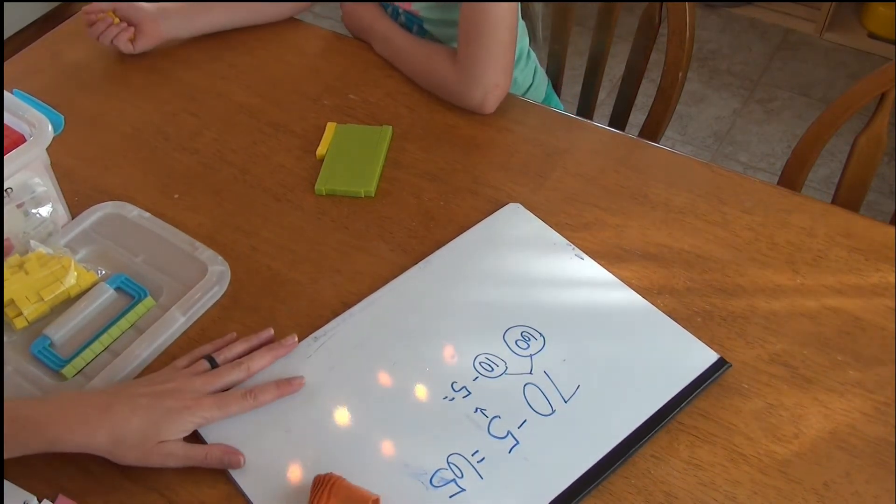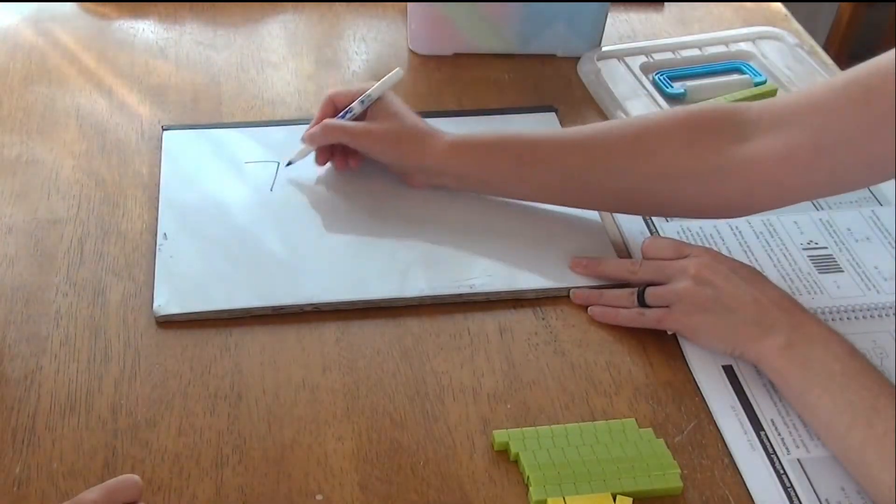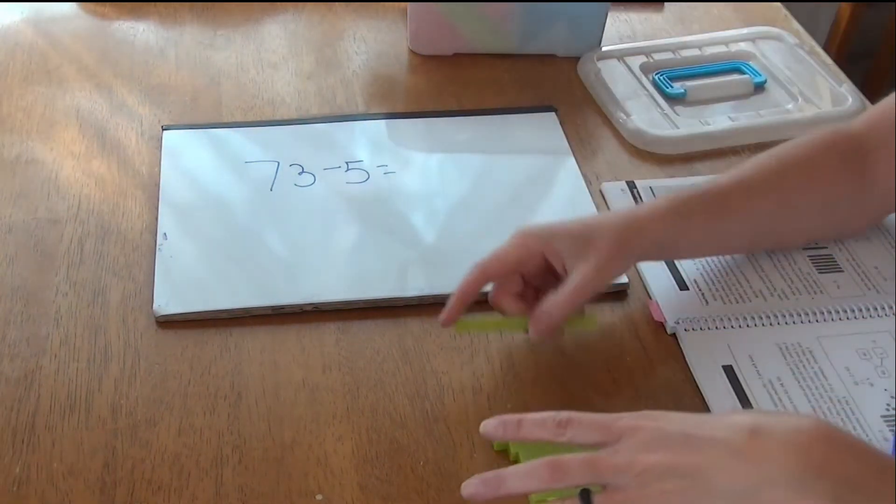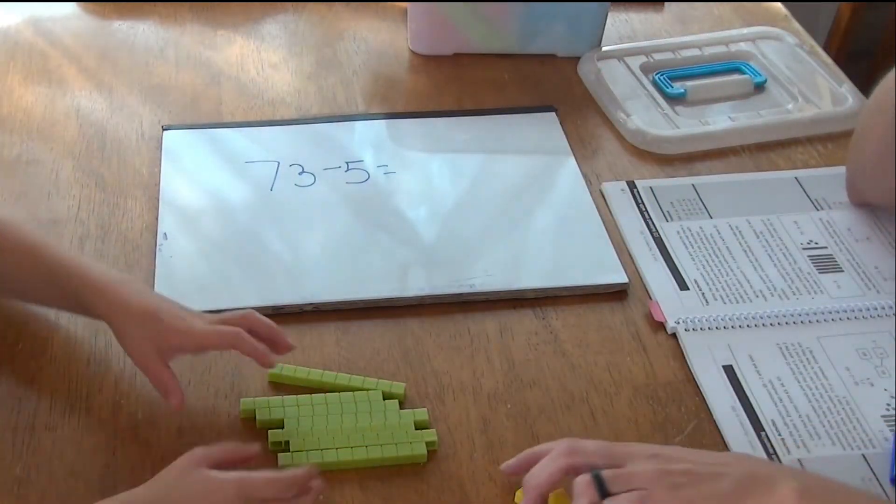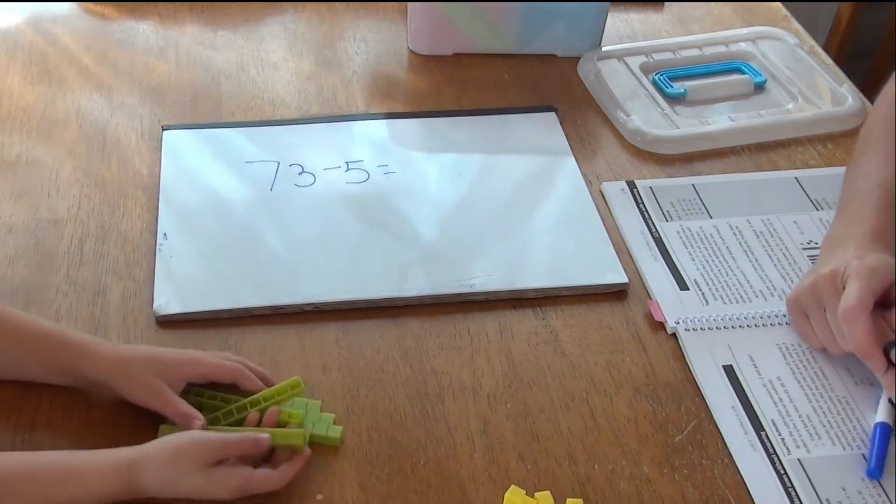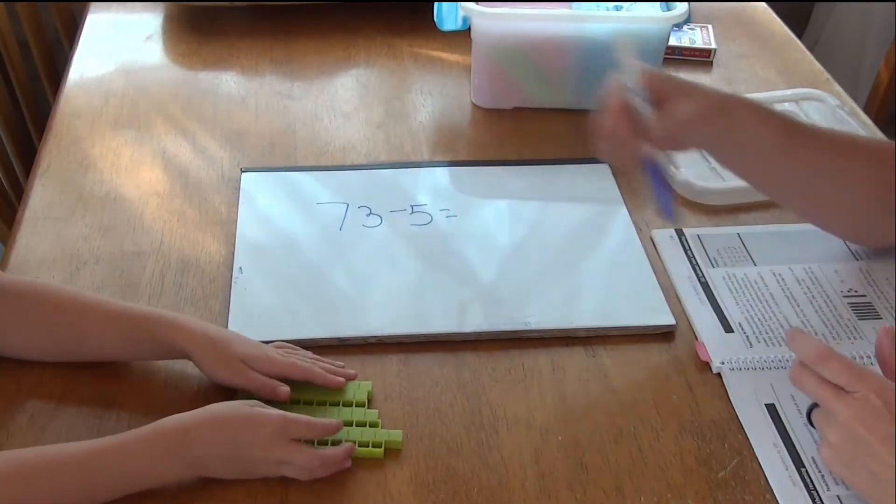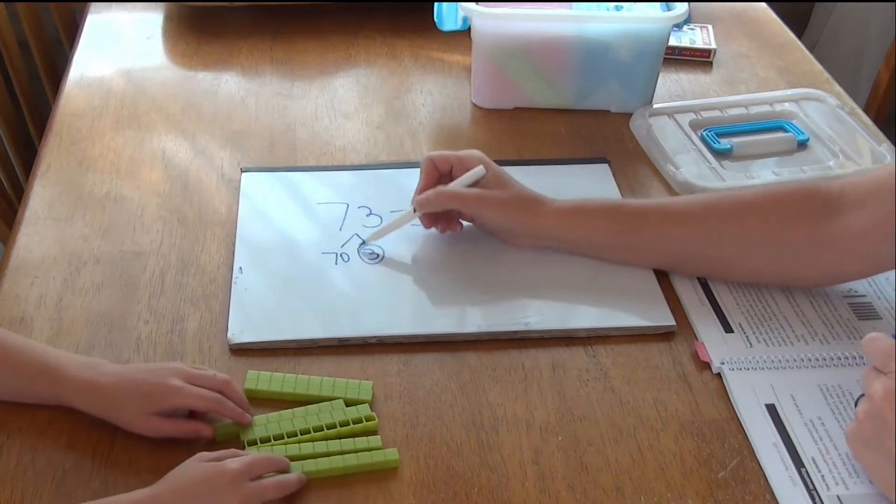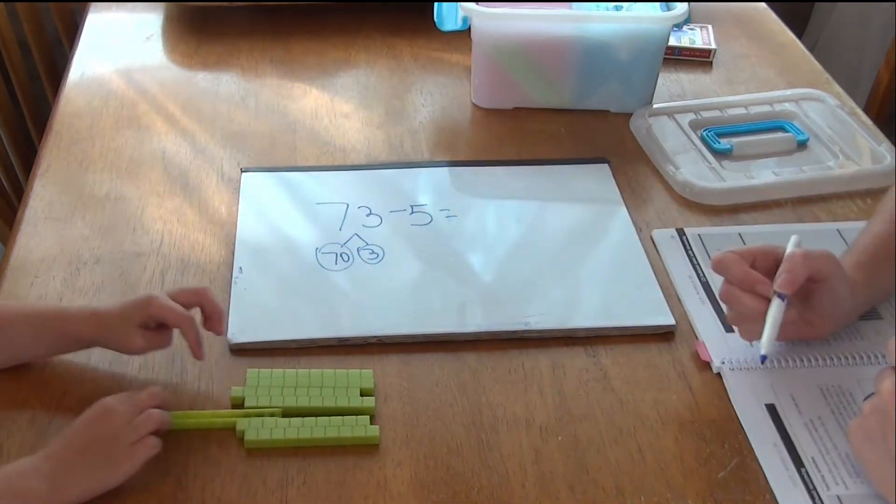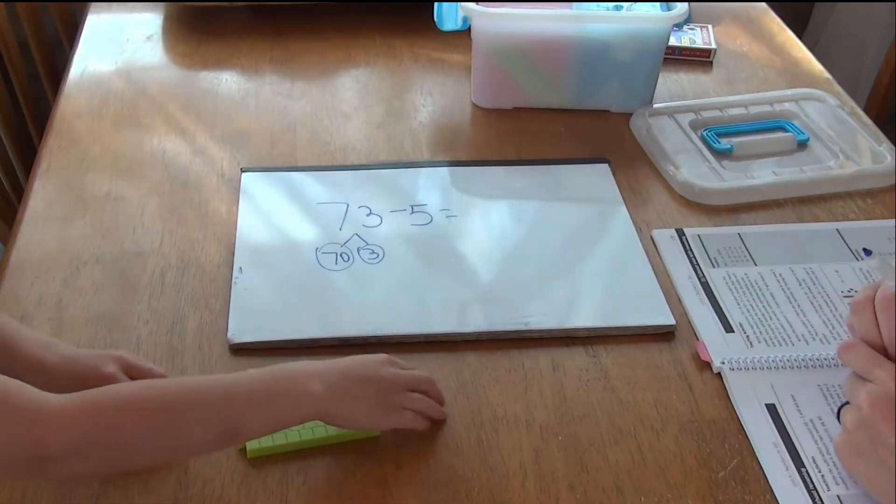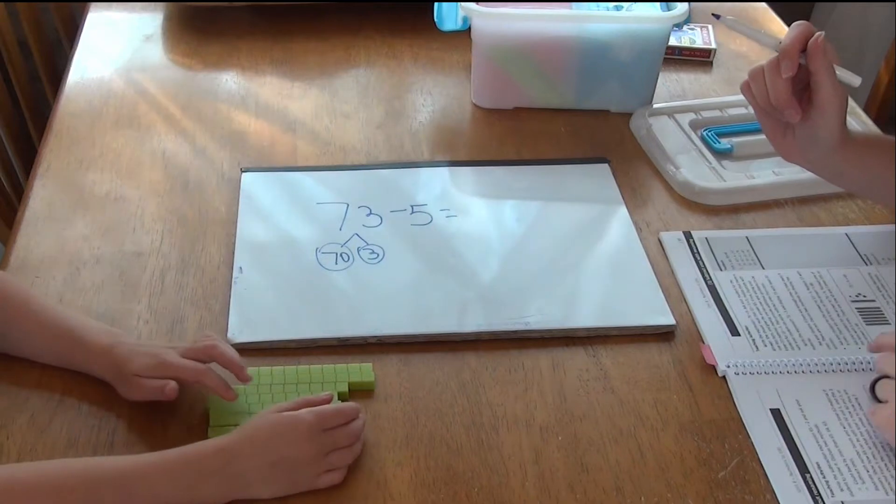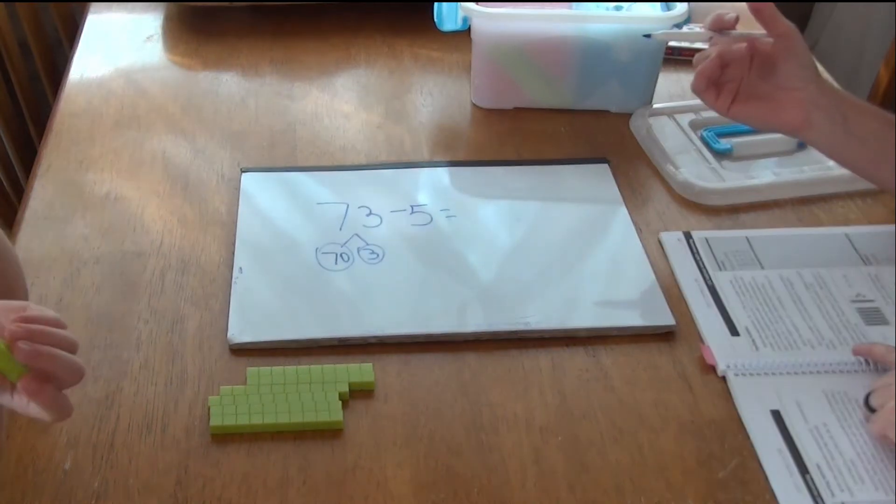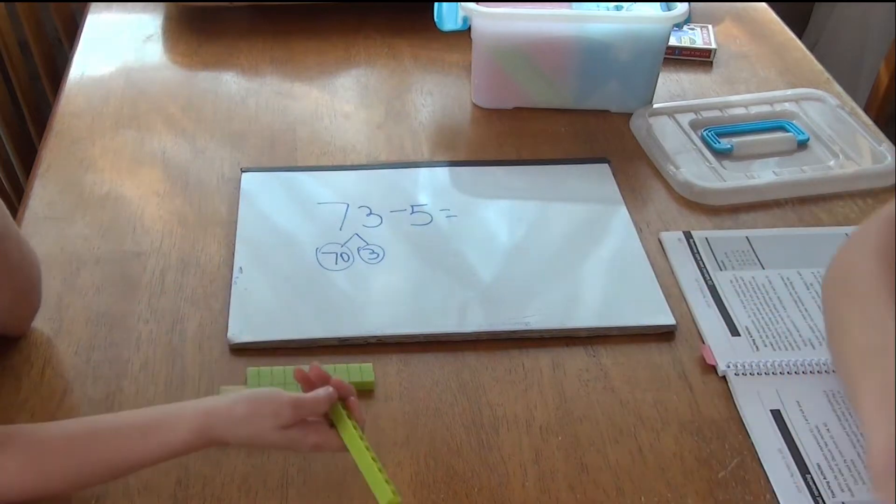All right. Now, let's try another one. Now we're going to look at 73 minus 5. Okay. So we're going to go ahead and we're going to get 73 back again. So make yourself 73 with the little blocks. Good job. So we made 73. Now if we break this out into a number bond, we would have 70 and we would have 3, right? Now, can we take 5 from 3? No. No, we can't do that, can we? So what are we going to have to do? We're going to have to melt one of my tens.